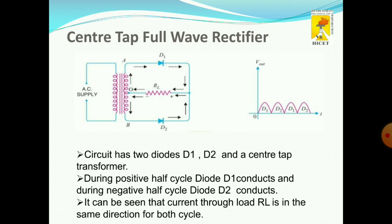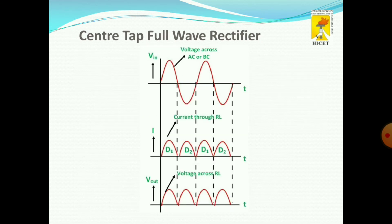We get the output waveform during 0 to pi. During the other half cycle, point B is more positive compared to point A, so the current path will be point B, D2, RL, and O. We get the output during this half cycle as well. During the positive half cycle we get the output, and during the negative half cycle we also get the output.